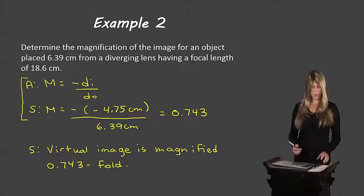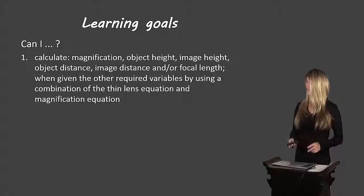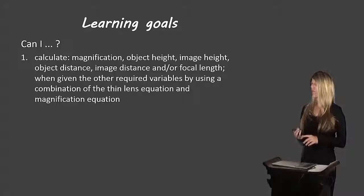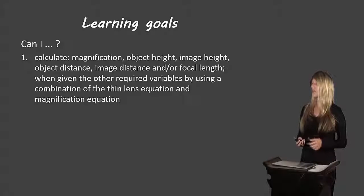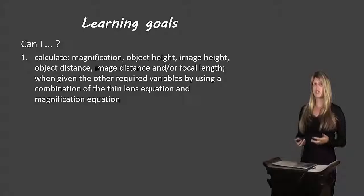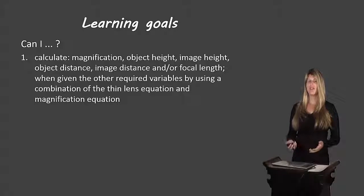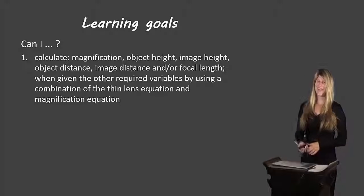That's how we solve a problem like that. Let's revisit our learning goal: you should be able to calculate magnification, object height, image height, object distance, image distance, or focal length when given the other required variables using a combination of the thin lens equation and the magnification equation for lenses. If you can do this, fantastic. If not, please re-watch the video. And if you're still having trouble, come ask me in class tomorrow. That's all for now.